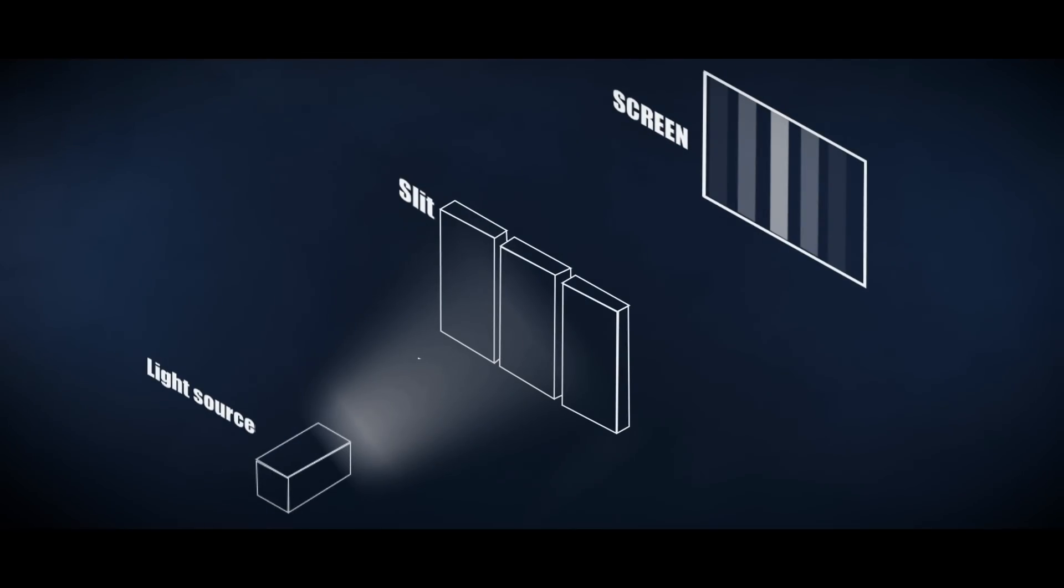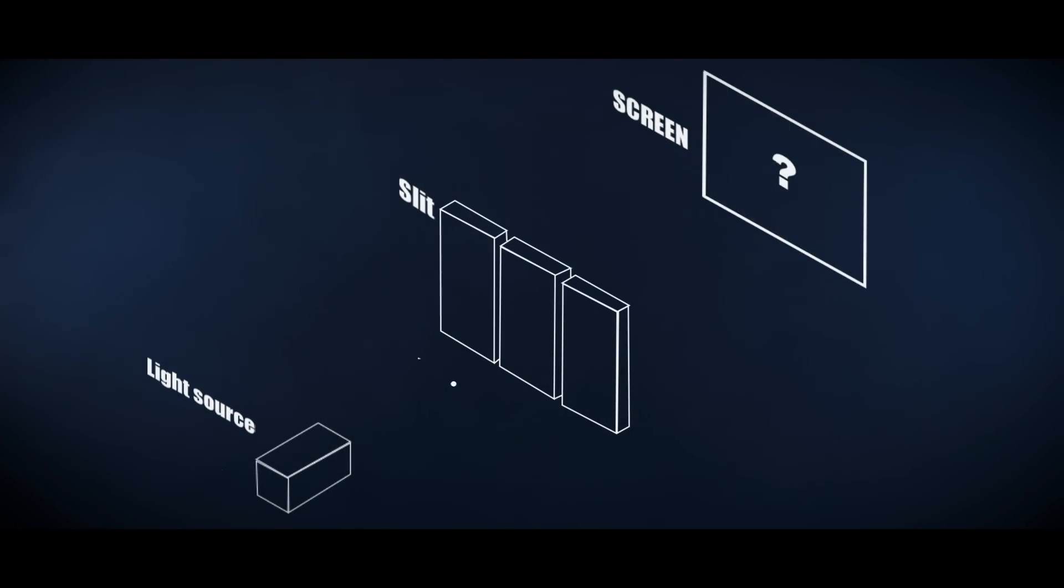Let's take it a step further. What happens if we reduce the power of the light source until it emits only a single photon at a time? Classical physics tells us that since photons pass through the slit one by one, they cannot interfere with each other. We should see two straight lines on the back screen.